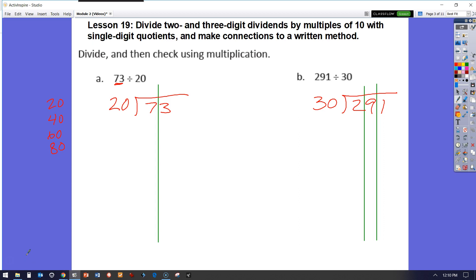Lesson 19, we're going to be dividing 2 and 3 digit dividends by multiples of 10 with a single digit quotient and make our connections to written methods. So let's take a look here.